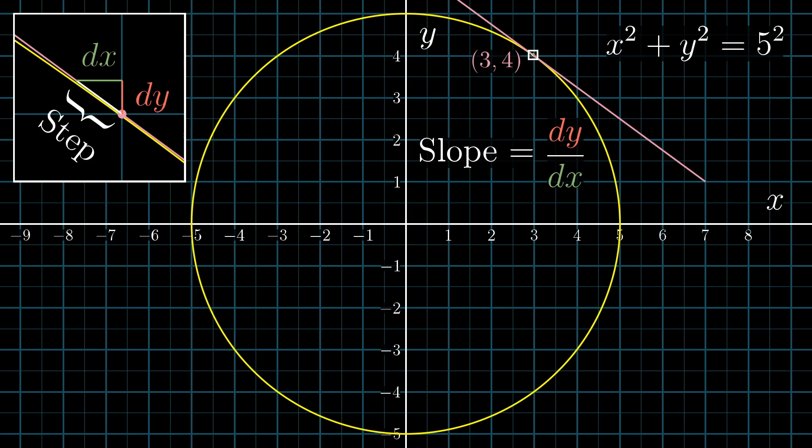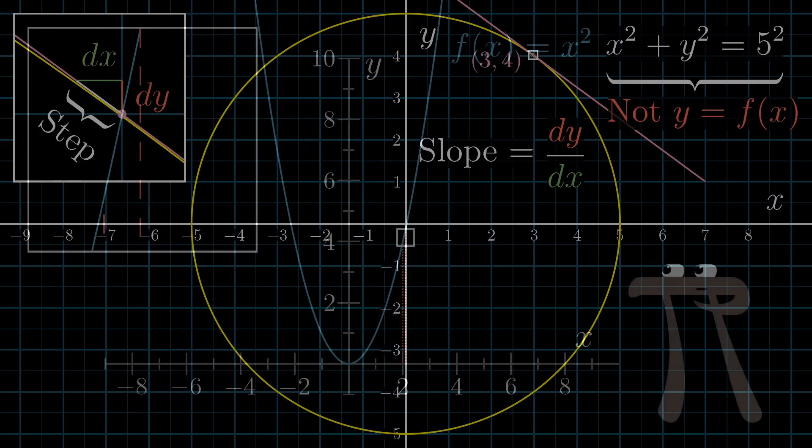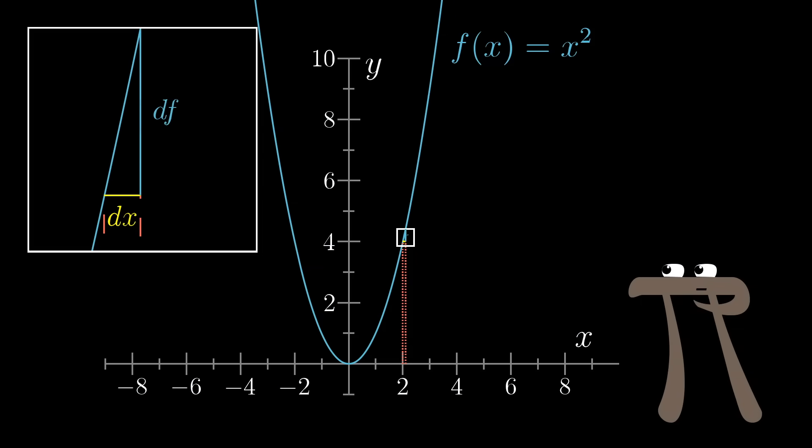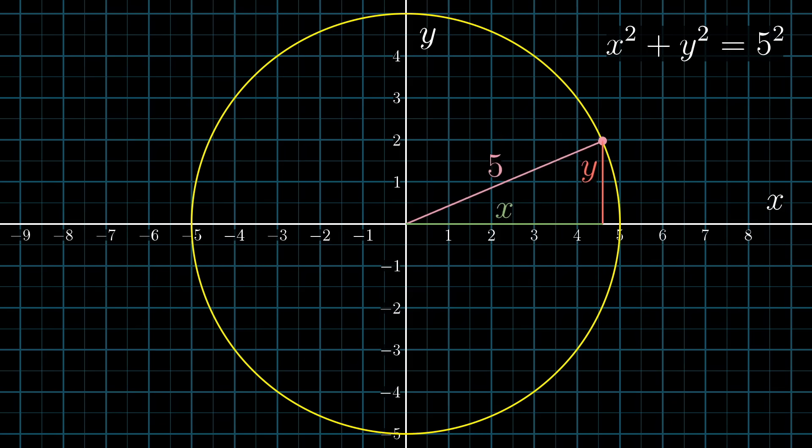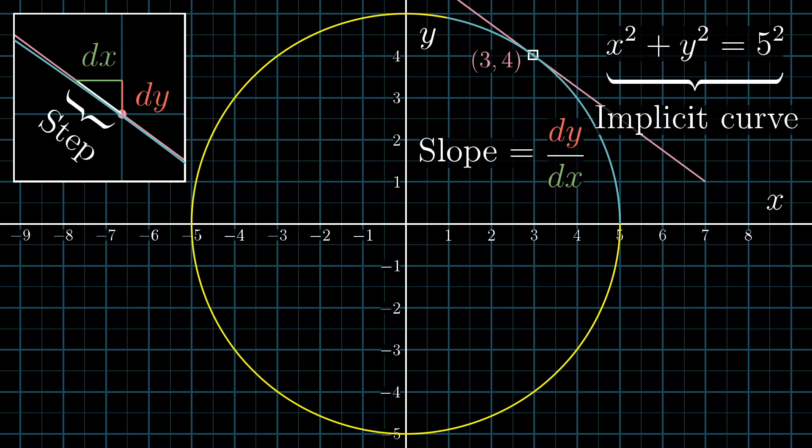But unlike other tangent slope problems in calculus, this curve is not the graph of a function. So we can't just take a simple derivative, asking about the size of some tiny nudge to the output of a function caused by some tiny nudge to the input. x is not an input, and y is not an output. They're both just interdependent values related by some equation. This is what's called an implicit curve. It's just the set of all points (x,y) that satisfy some property written in terms of the two variables x and y.